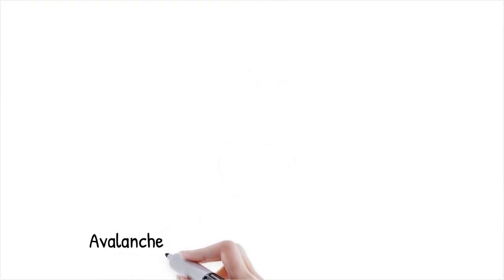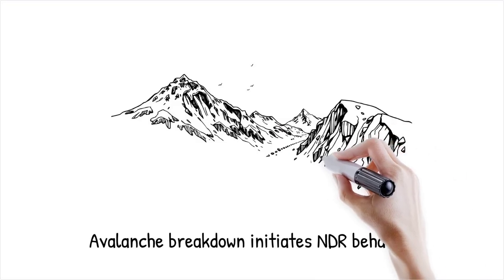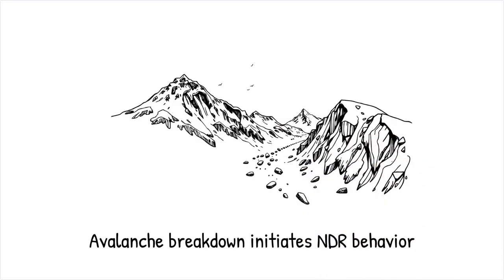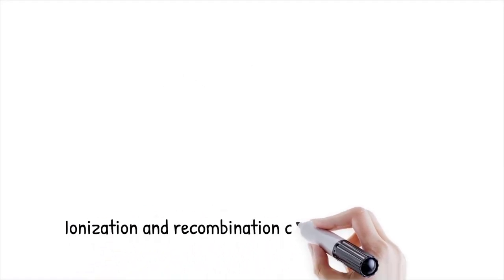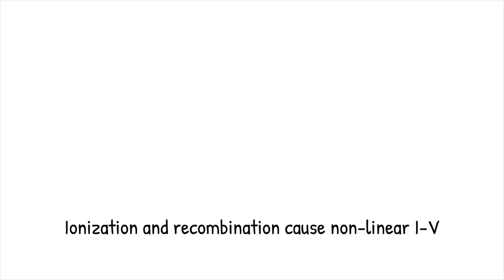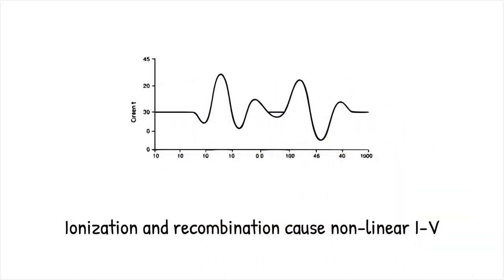Avalanche breakdown can induce NDR when charged carriers, accelerated by high electric fields, collide with atoms and generate additional carriers. This initially increases current but eventually disrupts conduction pathways. The resulting chaotic carrier multiplication creates regions where increased voltage paradoxically leads to a decrease in effective current. This interplay of ionization and recombination within the material gives rise to a non-linear IV characteristic typical of NDR behavior.